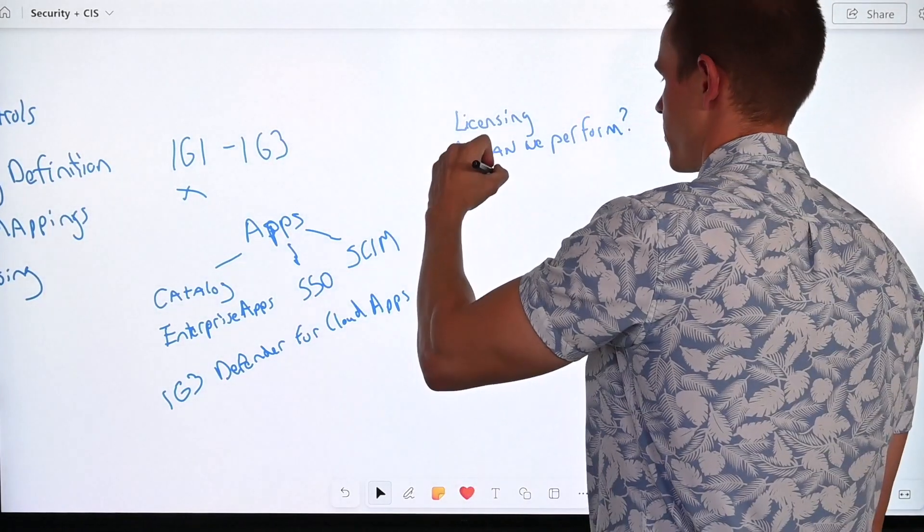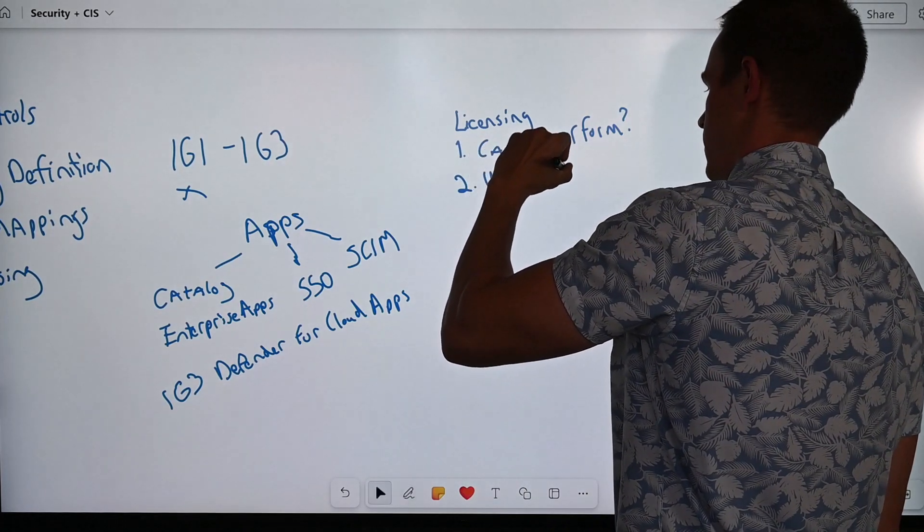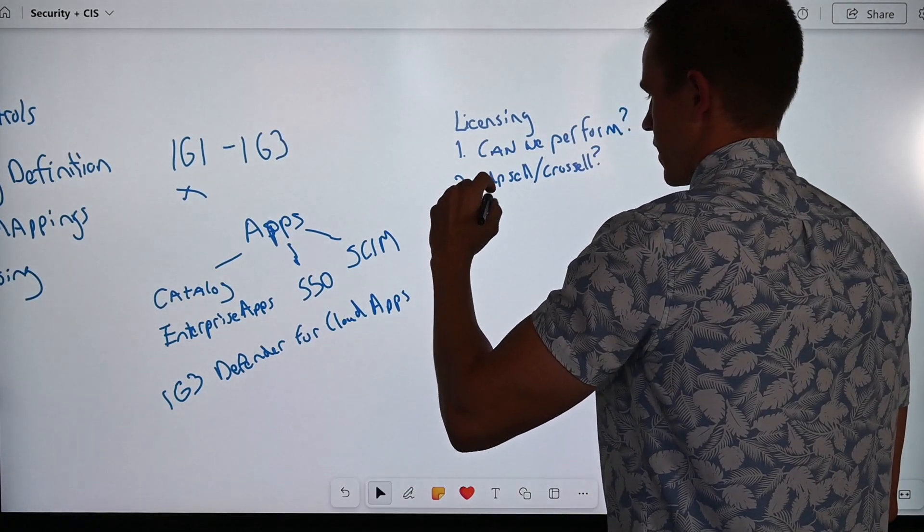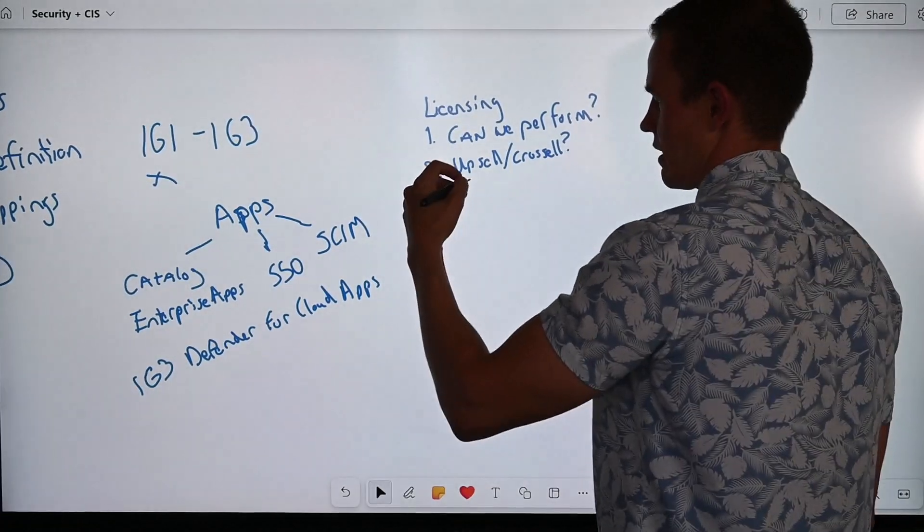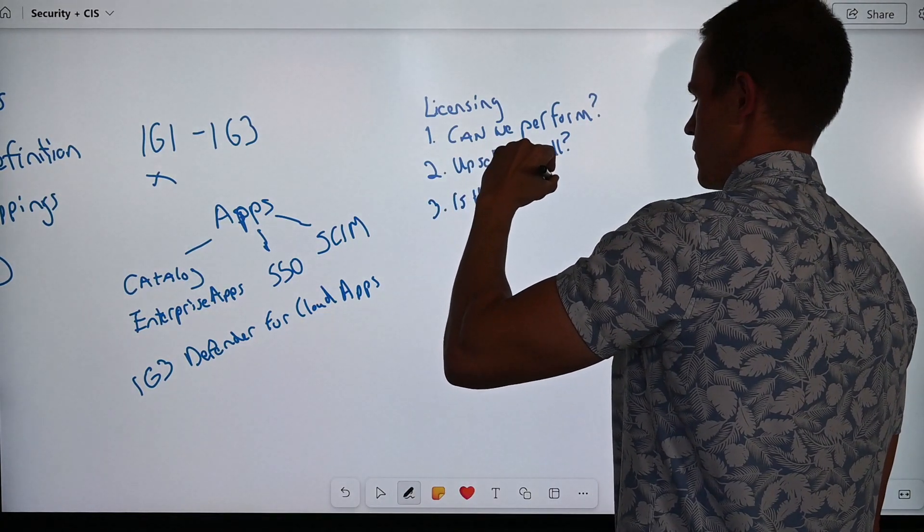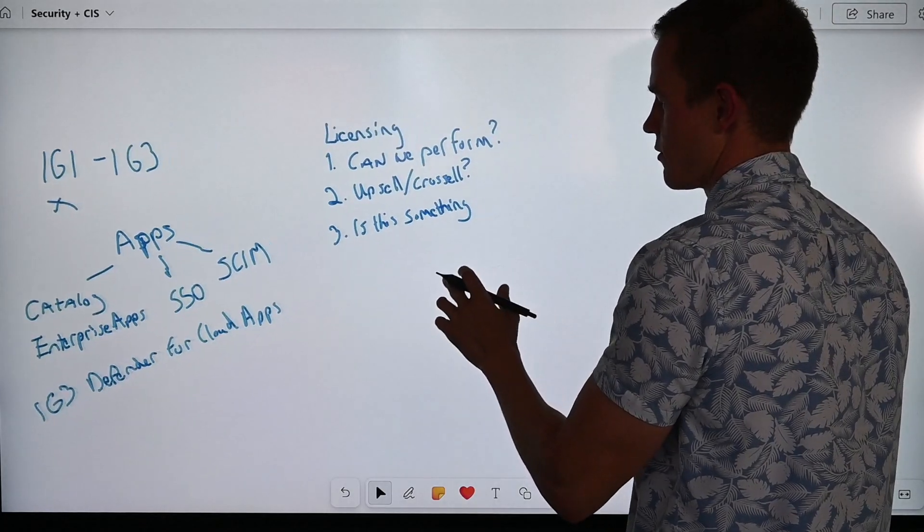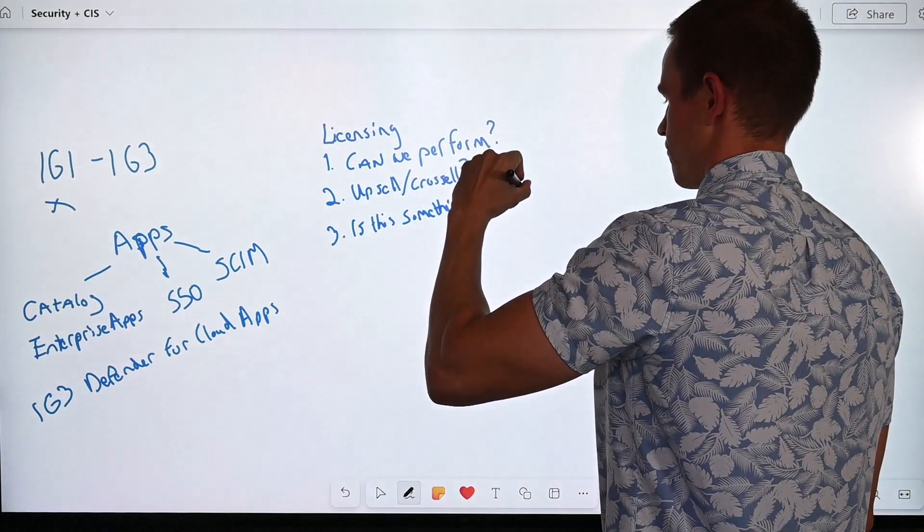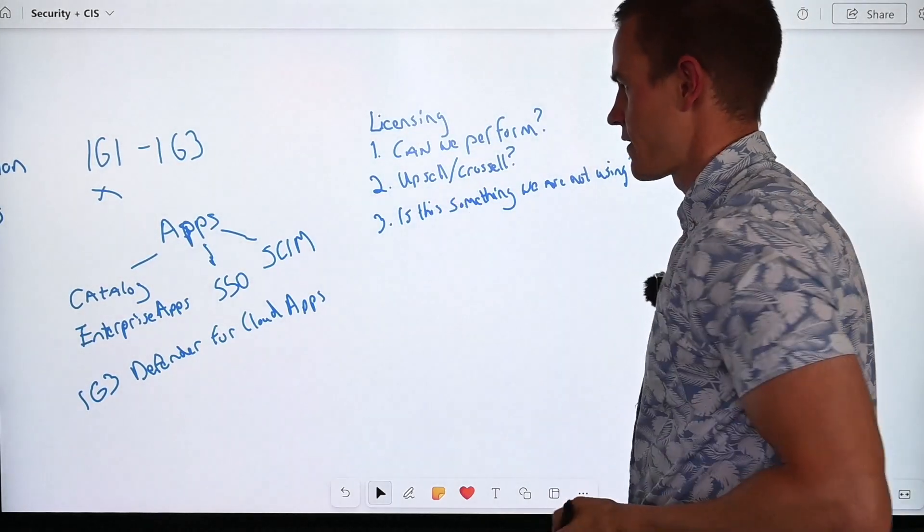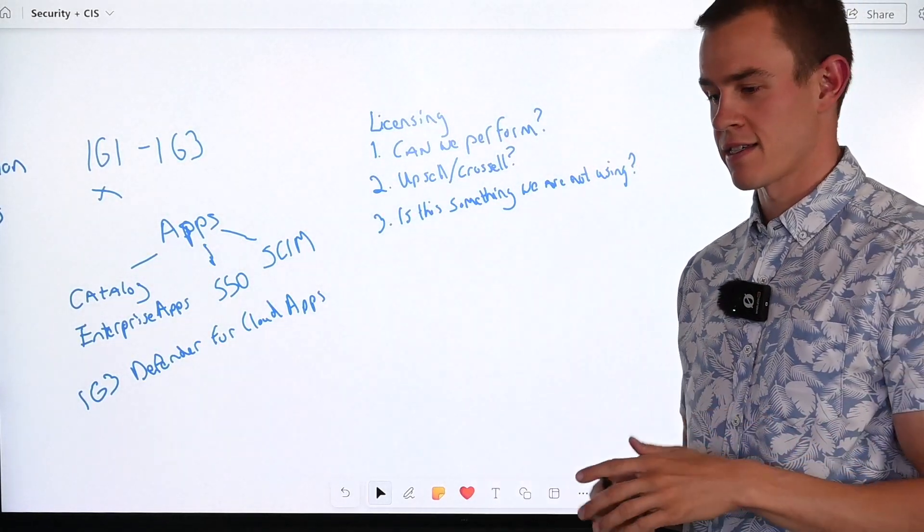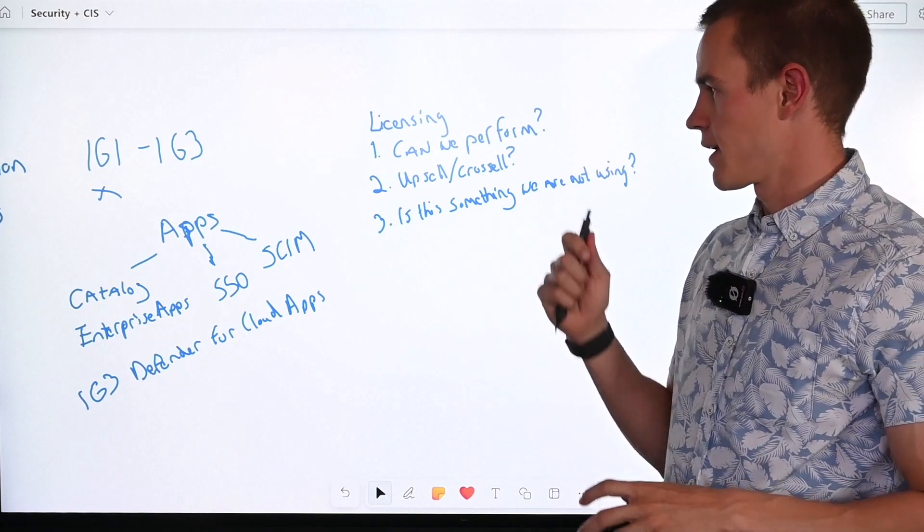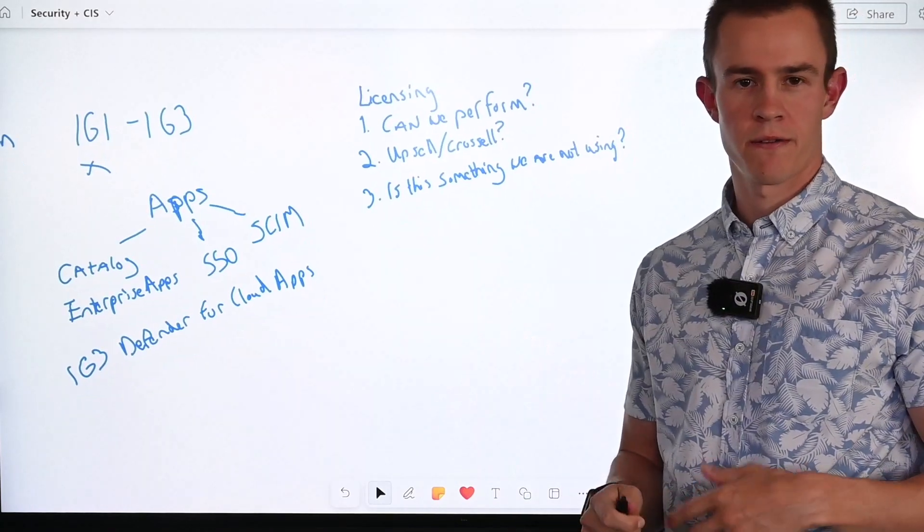So I'm saying basically, can you perform that security action? Number two is, is this an upsell or cross-sell opportunity for us? And then number three, if you think about the inverse of this, is to say that is this something we have but we're not using? So this is turning it on its head and saying, okay, well, we actually do have this licensing. I didn't even know that this security recommendation was possible for us to do.